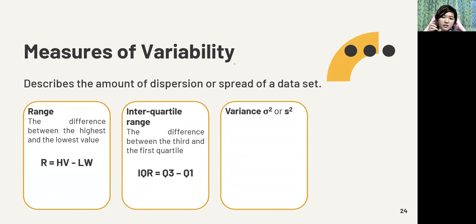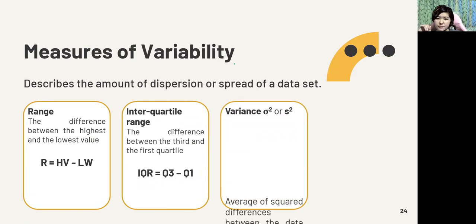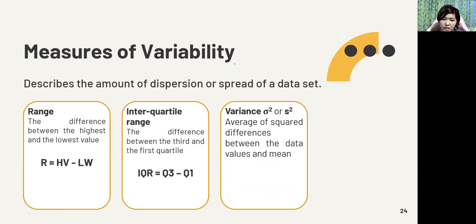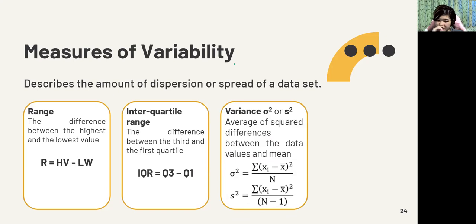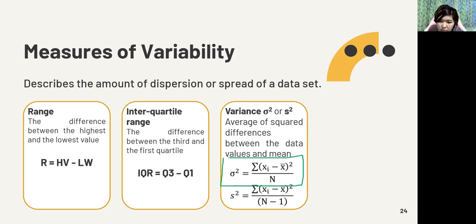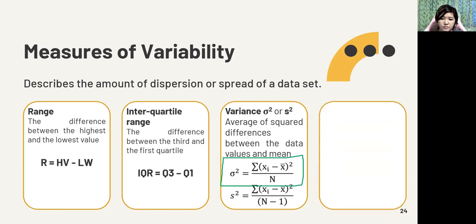Now we have the variance. This tells us how far apart the numbers are or how close they are. The variance is the average of squared differences between the data values and the mean. There are different formulas depending on whether it's a population or a sample. If we can say it's from a survey — for example, 390 students out of 1000 — that is sample data, not the entire population.